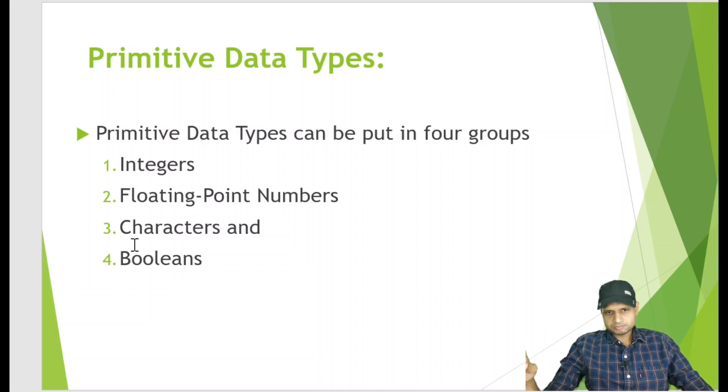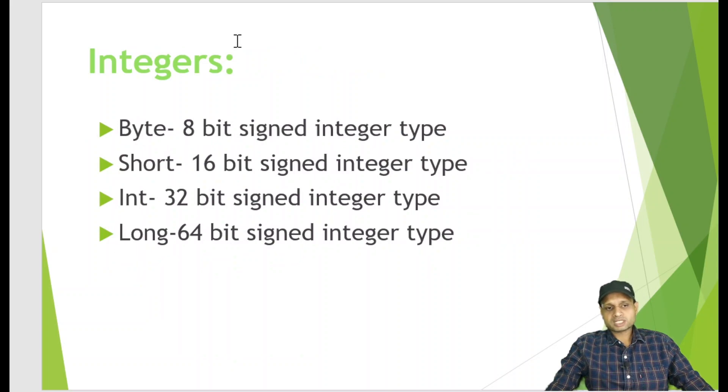What are integers? Integers are 4 types. The first one is byte, second one is short, int and long. Byte is 8 bit signed integer type, short is 16 bit signed integer type, int 32 bit signed integer type and long is 64 bit.